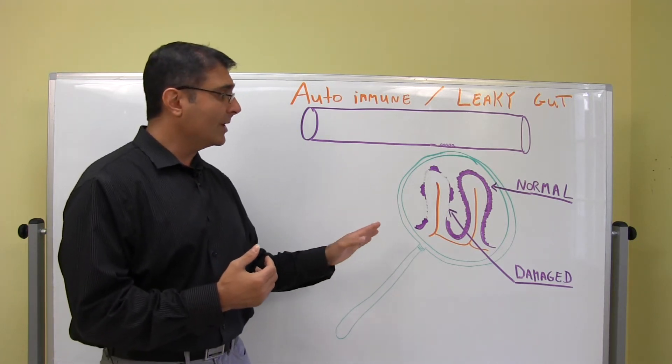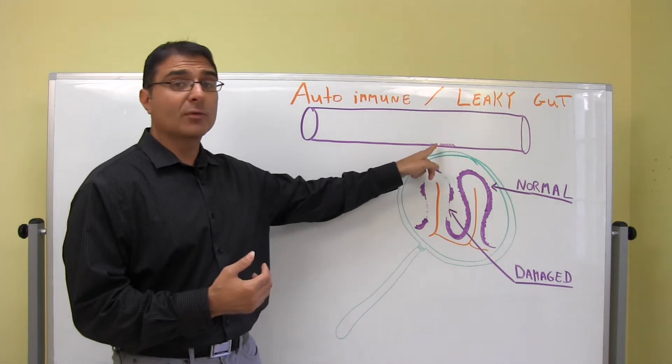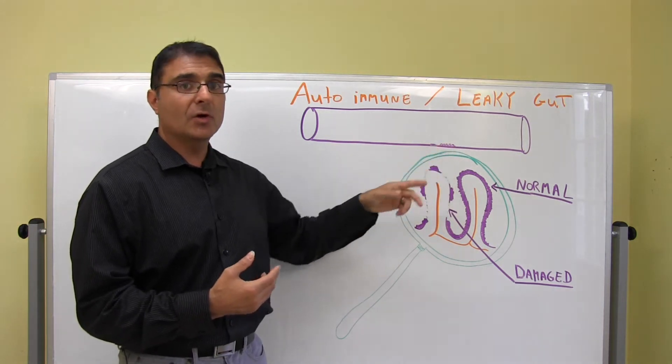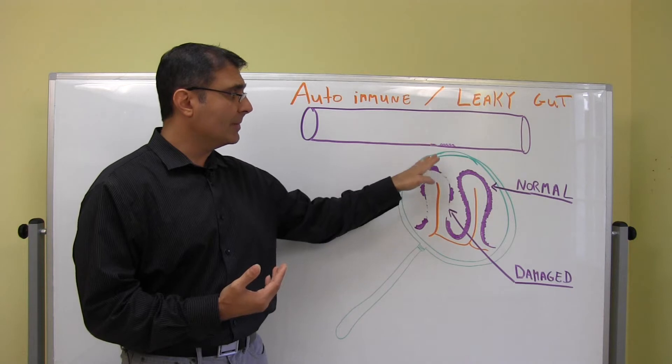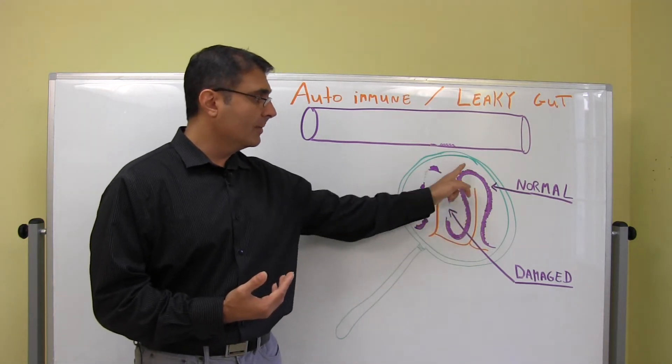And what we have, or what was developed, was this micro villi. In the intestine, you have these little tiny fingers called villi, and if I was to put them under a magnifying glass, they would look like this. Here's a normal micro villi.